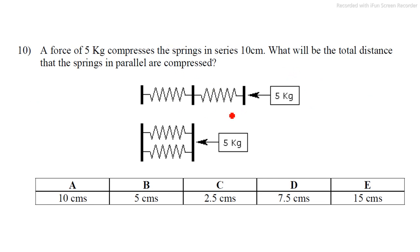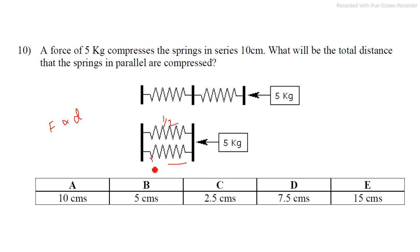Next example: two springs are connected in series with a compressive force of 5 kg — find the compression distance. Here the two springs are connected in parallel, so the load is halved: force becomes F/2, and since force is proportional to distance, the distance also becomes D/2. The question gives 10 cm, so the answer is 5 cm.